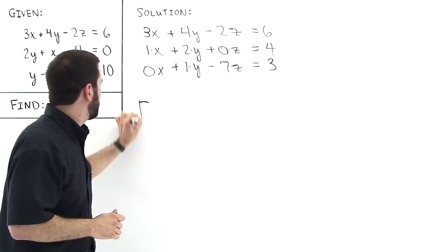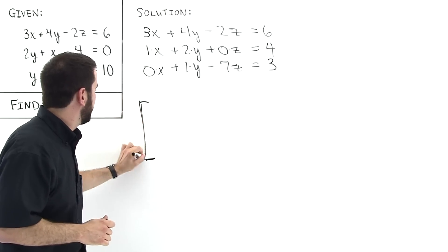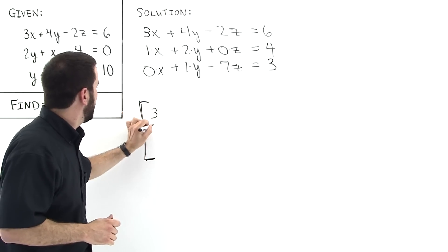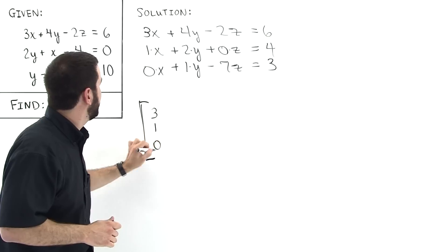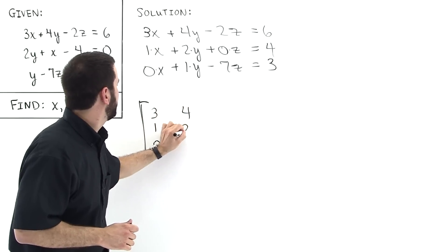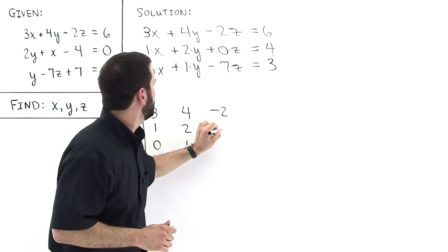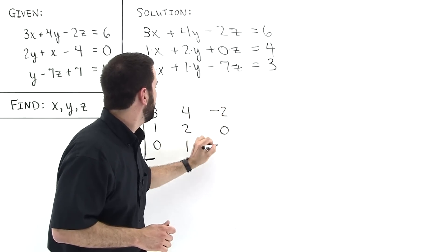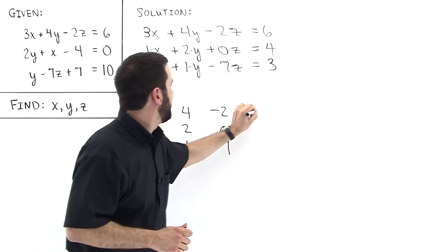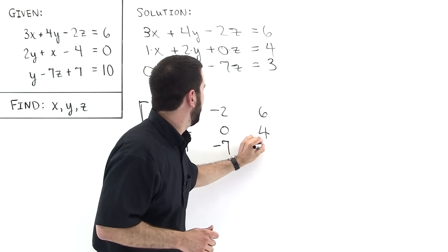And that matrix will look like the following: we'll have 3, 1, and 0 in the first column; 4, 2, and 1 in the second column; minus 2, 0, and minus 7 in the third column; and then 6, 4, and 3 as the constants on the right.